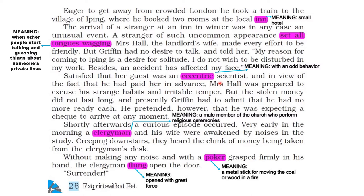Satisfied that her guest was an eccentric scientist — eccentric referring to somebody with odd or strange behaviour — and in view of the fact that he had paid her in advance, Mrs. Hall was prepared to excuse his strange habits and irritable temper. But the stolen money did not last long, and presently Griffin had to admit he had no more ready cash. He pretended, however, that he was expecting a cheque to arrive at any moment. Mrs. Hall was ready to overlook his peculiar behaviour as he had paid in advance using money stolen from the shopkeeper at Drury Lane, but soon ran out of funds while assuring her a cheque was coming.